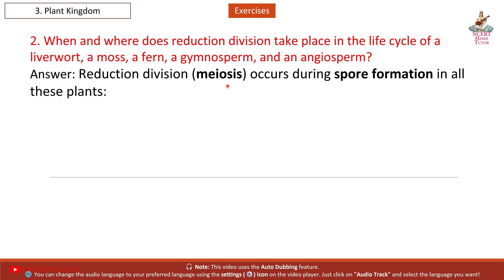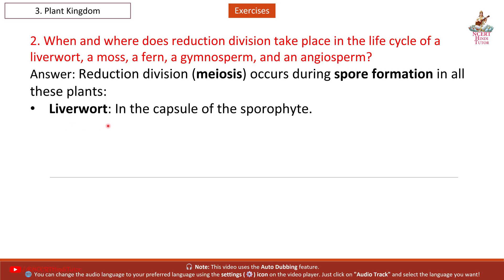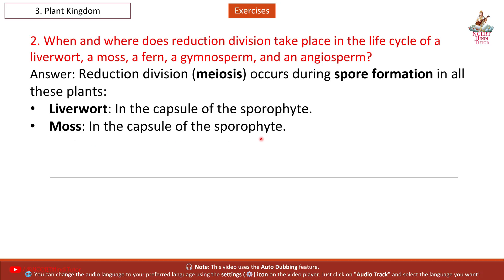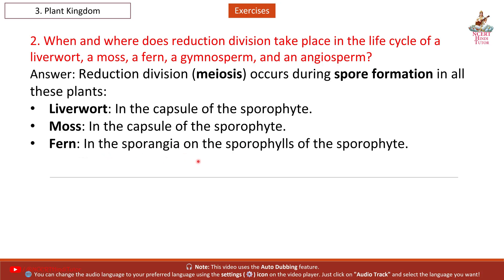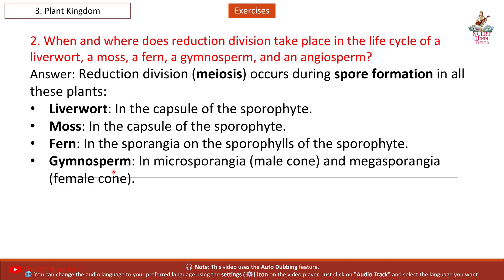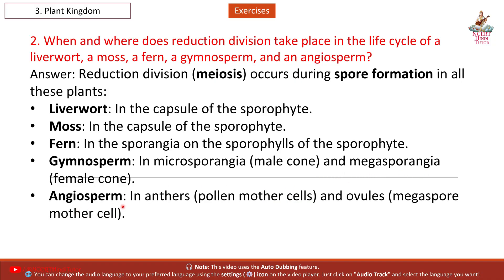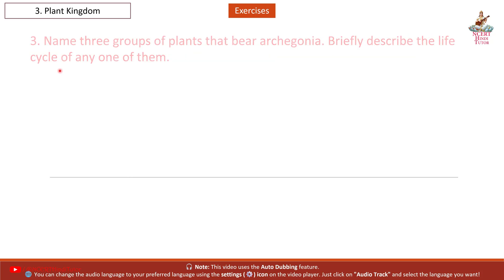Answer: Reduction division (meiosis) occurs during spore formation in all these plants. Liverwort — in the capsule of the sporophyte. Moss — in the capsule of the sporophyte. Fern — in the sporangia on the sporophylls of the sporophyte. Gymnosperm — in microsporangia (male cone) and megasporangia (female cone). Angiosperm — in anther's pollen mother cells and ovule's megaspore mother cell.